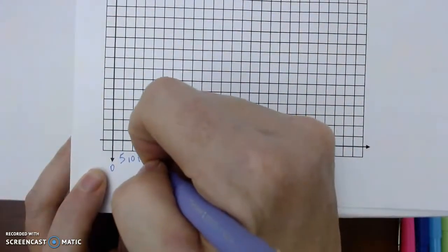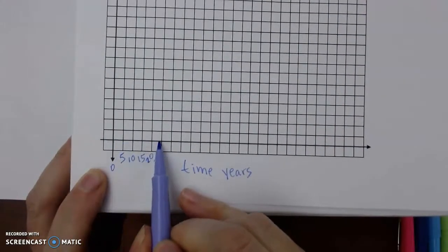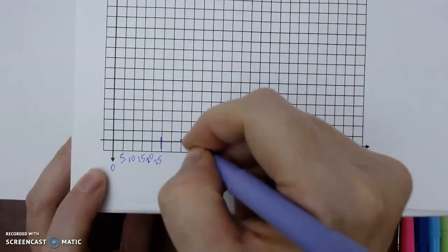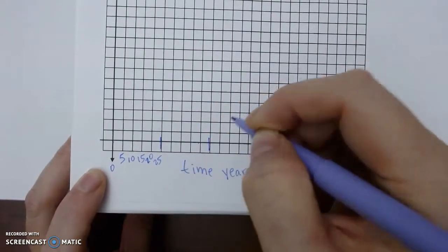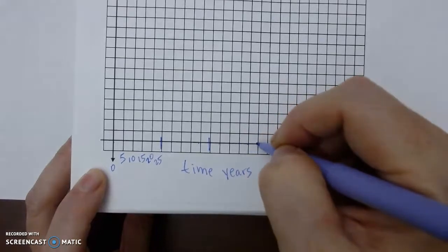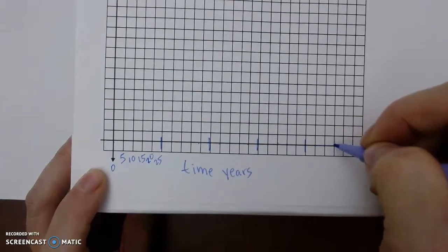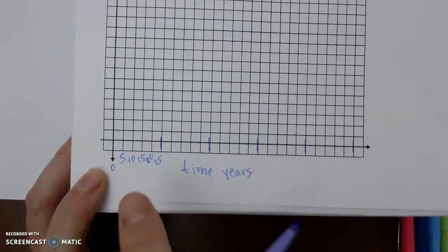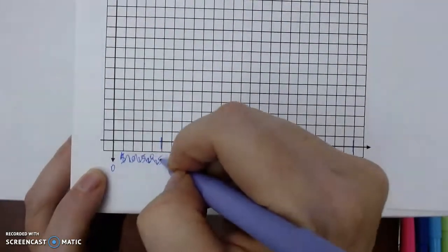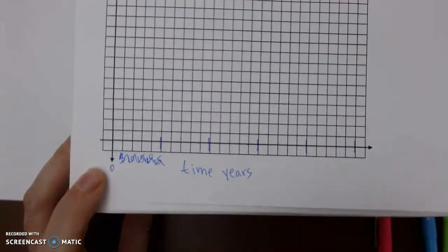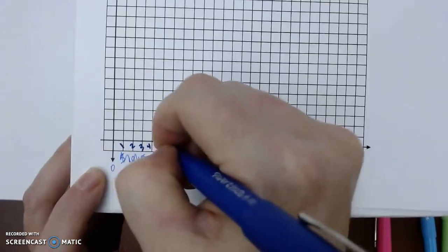Please label what you're using for your increments. I could have done like 1, 2, 3, 4, 5, but it really depends on what your increment is and how big your graph is. So 5, 10, 15, 20, 25.